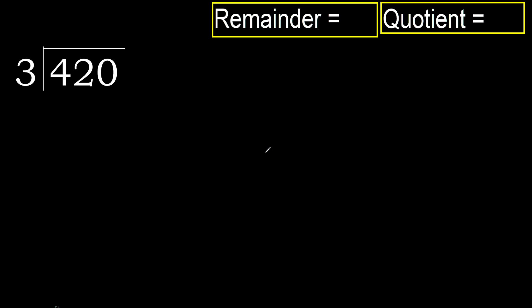420 divided by 3. 4 is not less, therefore with 4, 3 — multiply by which number is nearest to 4 but not greater.